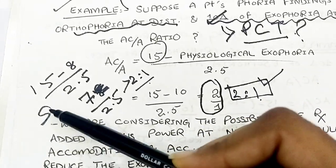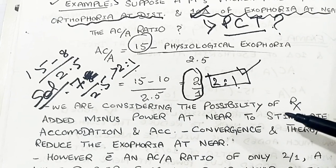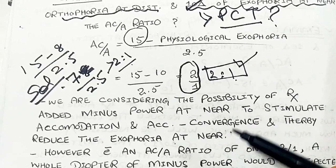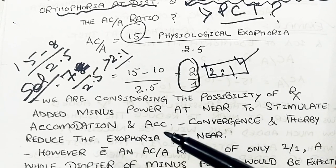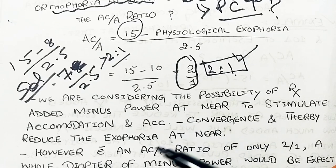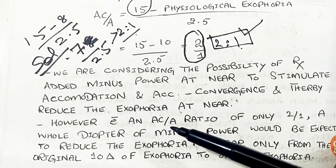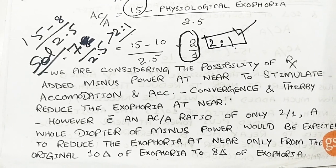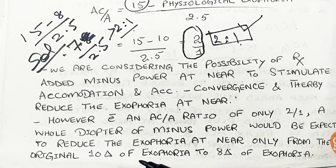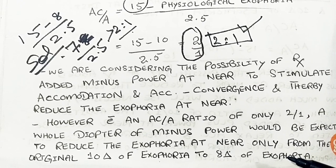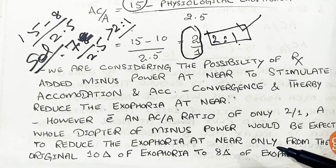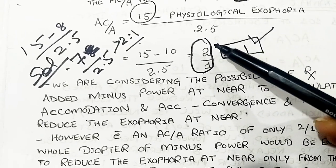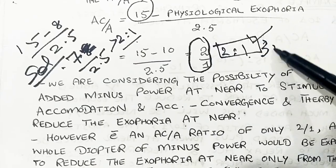What is the solution for convergence insufficiency? Simply, minus lenses are added in the patient's spectacles. Minus lenses induce accommodation at near, stimulate accommodation, and the accompanying accommodative convergence is induced, thereby reducing exophoria at near. However, with an AC/A ratio of only 2 to 1, a whole diopter of minus power would only reduce exophoria from 10 prism diopters to 8 prism diopters.